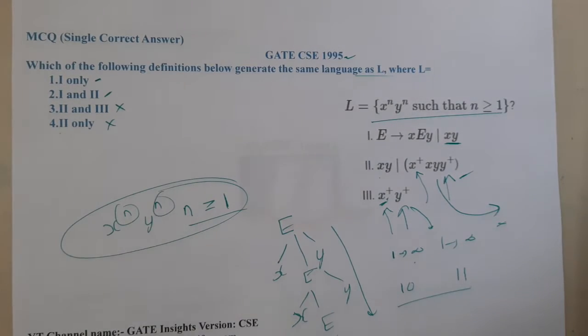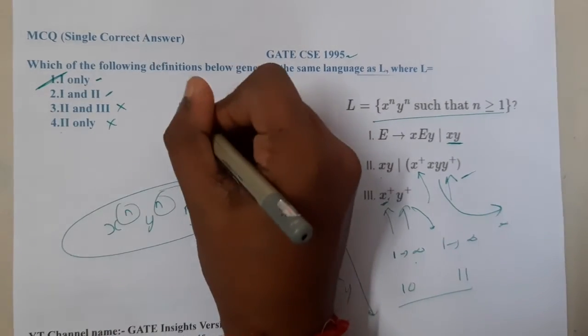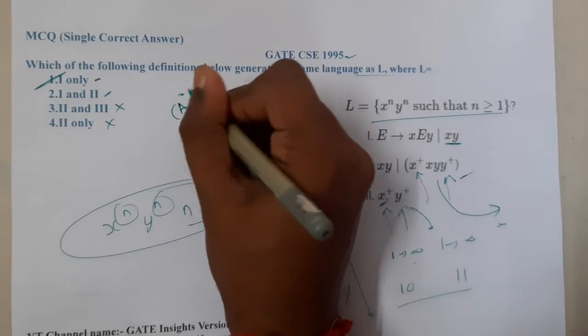That is the major issue with respect to option second one and third one. So that is the reason why most probably only A will be the correct answer guys. I hope everyone got a clear idea with respect to this. This is an easy question.